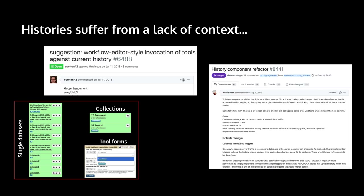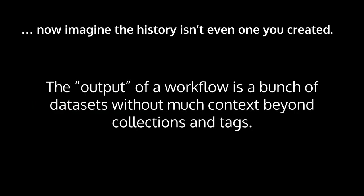I think part of the problem was that histories suffer from this lack of context. We do all these things to provide context for the big list of things in the history — tool form enhancements, tags, collections, etc. But ultimately, even after this huge history we write, Galaxy's histories are still just a big flat list of things that grows very quickly. If you didn't even run the workflow yourself, the output is just a bunch of datasets with not a lot of context.